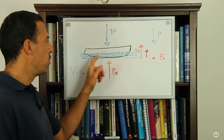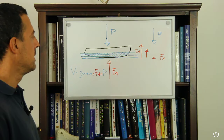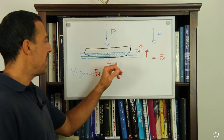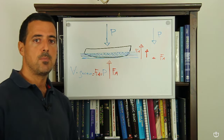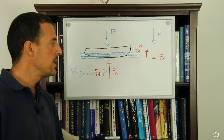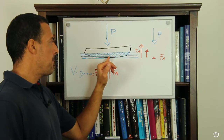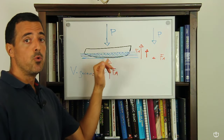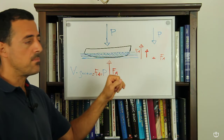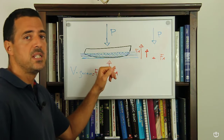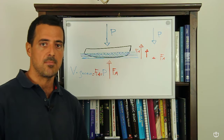Dobbiamo calcolare il volume della parte immersa della nostra barca, il volume dell'opera viva. Questo per poter valutare la spinta di Archimede, cioè la spinta che permette alla nostra barca di galleggiare. La spinta di Archimede è pari al peso del volume di liquido spostato. Per valutare questo peso abbiamo bisogno di valutare il volume di liquido spostato, che è pari al volume dell'opera viva della nostra barca.